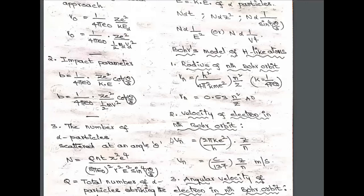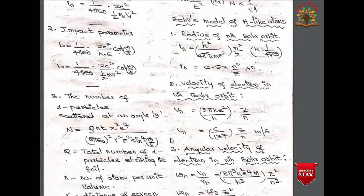The second formula is the impact parameter B, given by B = (1/4πε₀) × Ze² / KE × cot(θ/2), or B = (1/4πε₀) × Ze² / (½mv²) × cot(θ/2).